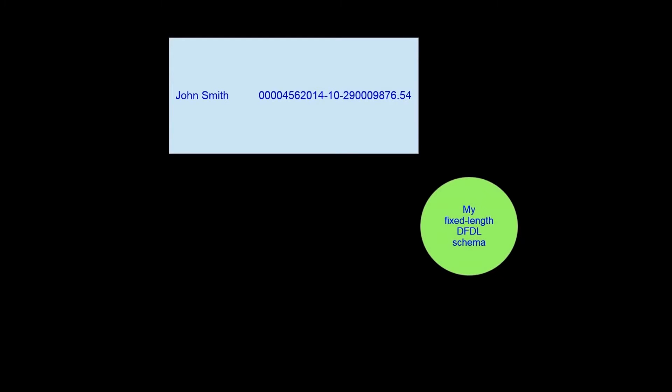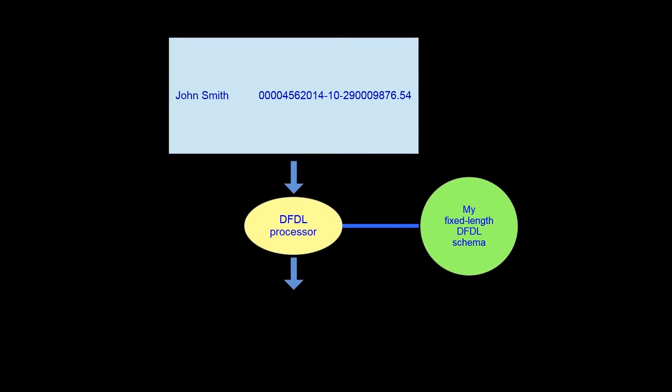In our introductory video, we looked at an example of a fixed length data format. We said that you can create a DFDL schema that fully describes the fixed length text data and then use this with any DFDL processor, and that the DFDL processor uses the DFDL schema to parse the data and create the required data structure. Let's look at the content of that DFDL schema.